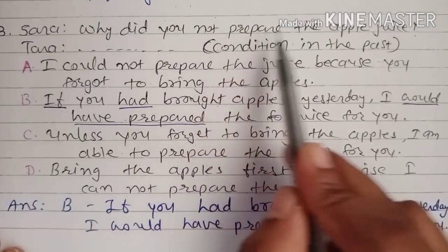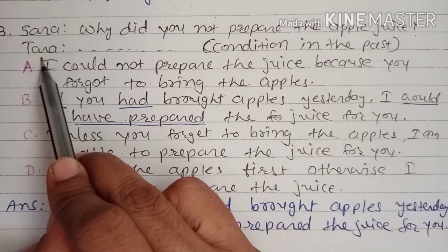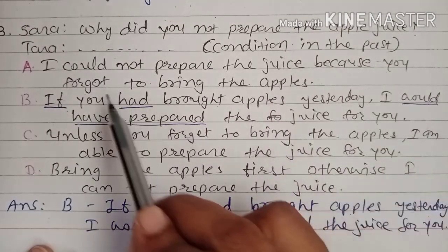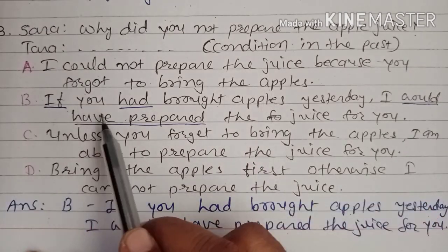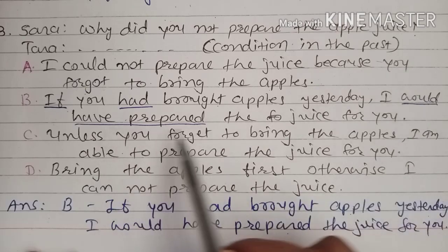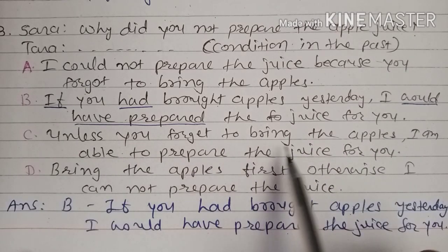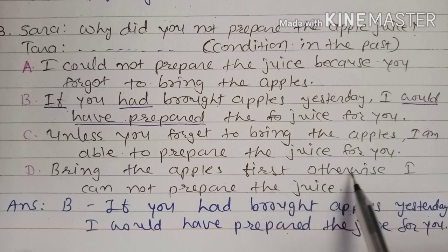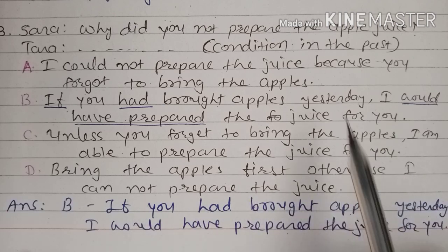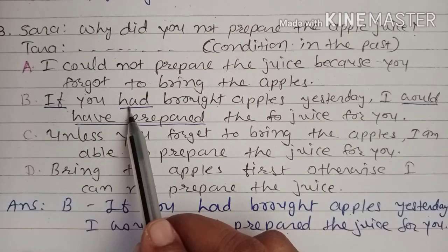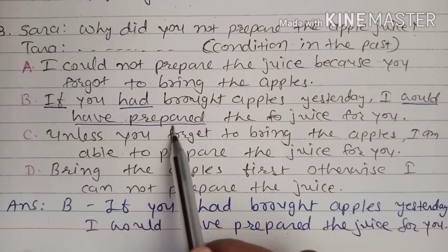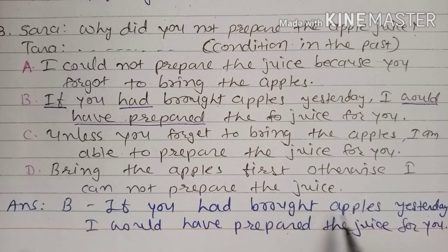Next dialogue: 'Why did you not prepare the apple juice?' The function required is condition in the past. The correct answer is: 'If you had brought apples yesterday, I would have prepared the juice for you.' Keywords 'had brought' and 'would have prepared' indicate condition in the past. Other options like 'Unless you forget to bring the apples' or 'Bring the apples first' do not fit this function.